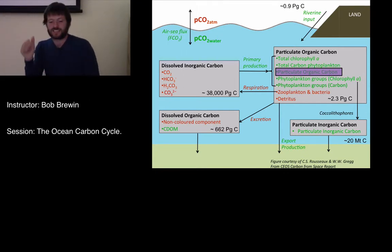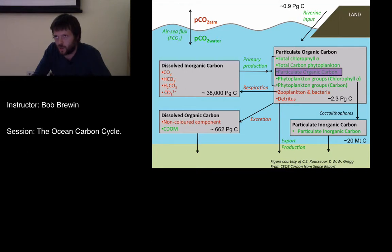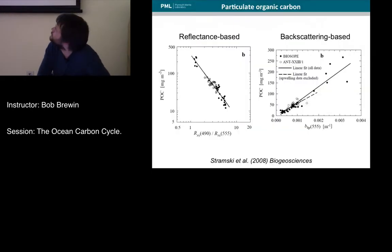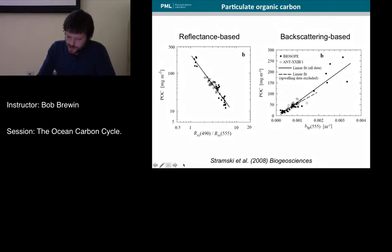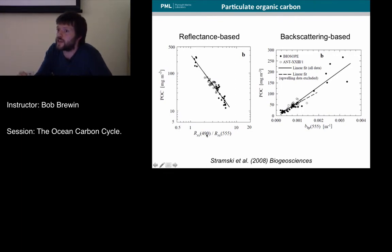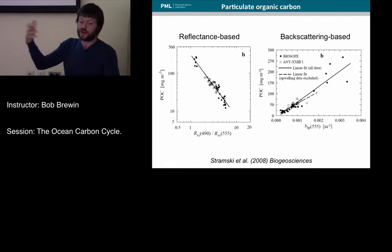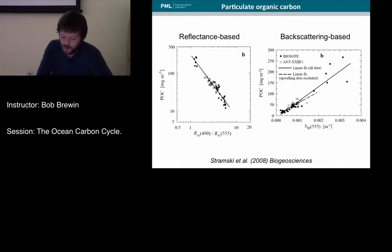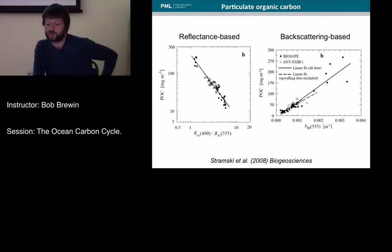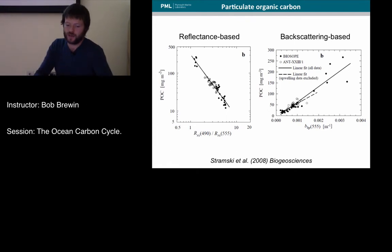In addition to phytoplankton carbon, we can estimate particulate organic carbon — the organic carbon of all particles, not just phytoplankton, including things like detritus and potentially bacteria. A paper by Stramsky in 2008 highlights two approaches: one using a ratio of blue to green light, very similar to how chlorophyll is estimated; and another using the backscattering coefficient. There are also methods using relationships between POC and chlorophyll, as well as diffuse attenuation coefficient or mixtures of chlorophyll and backscattering.